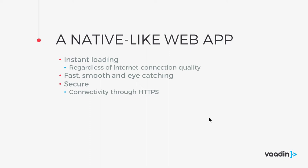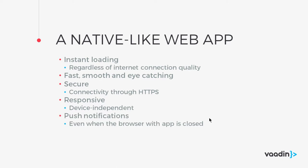We should have responsive layouts so the app is device independent — something native apps have and something we can get for free with responsive design. Perhaps the most important differentiator is push notifications: even if your application is closed you can still receive notifications from the server. There is now an API in progressive web apps that allows push notifications, so you can have the browser closed and still receive notifications.